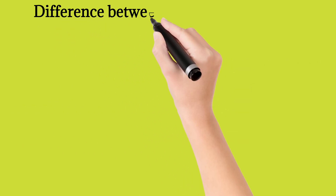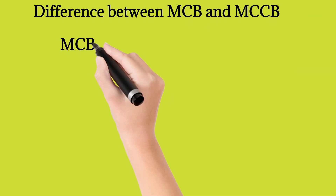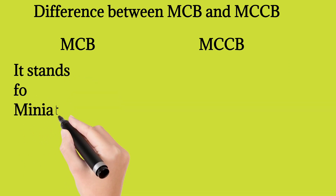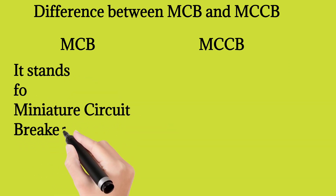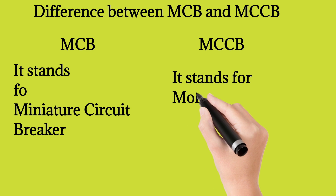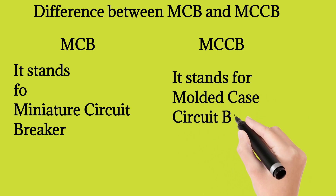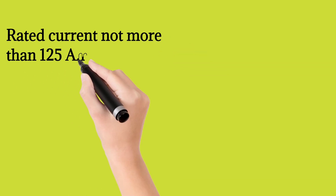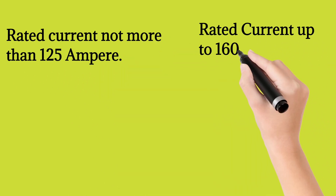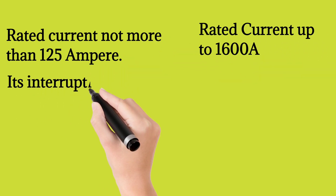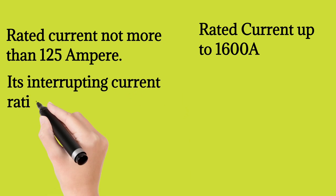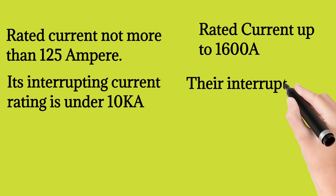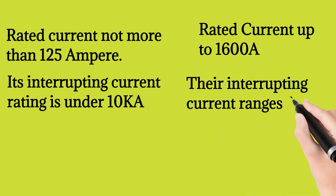Difference between MCB and MCCB: MCB stands for Miniature Circuit Breaker; MCCB stands for Molded Case Circuit Breaker. MCB has a rated current of not more than 125A, while MCCB has a rated current of up to 1600A. MCB's interrupting current rating is under 10kA, whereas MCCB's interrupting current ranges from around 10kA to 85kA.